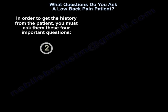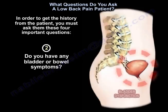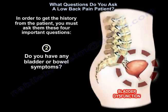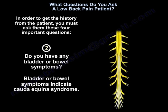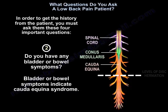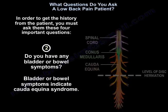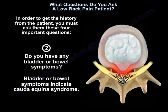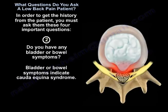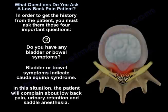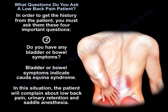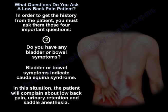The second question is about bladder and bowel symptoms. You ask the patient: do you have any bladder or bowel symptoms? Bladder and bowel symptoms indicate cauda equina syndrome — the patient may have a serious problem. In this situation, the patient will complain about low back pain, urinary retention, and saddle anesthesia.